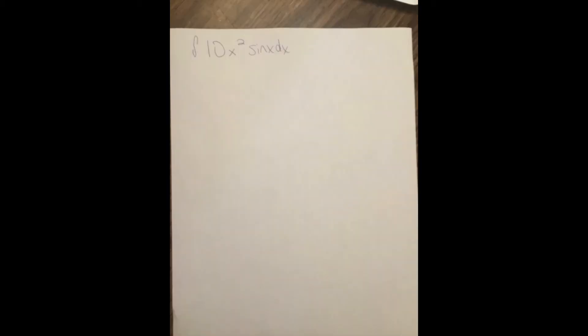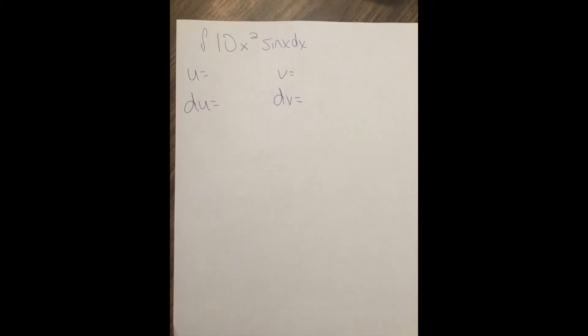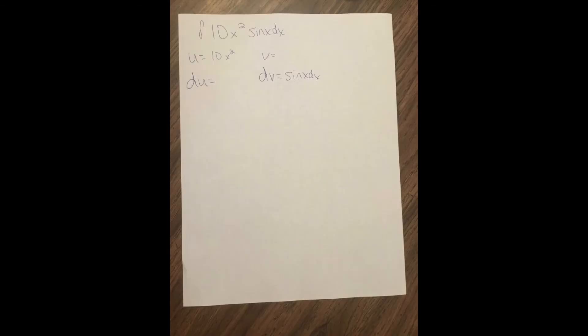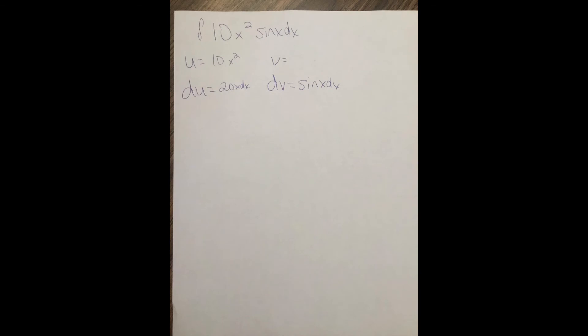This one's going to be more work. So remember, when we do integration by parts, the good advice is to make a polynomial u. That makes u 10x squared and dv sine x dx. And then we fill the rest in,